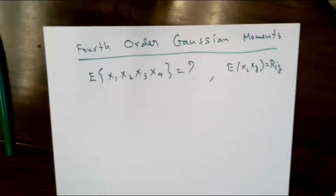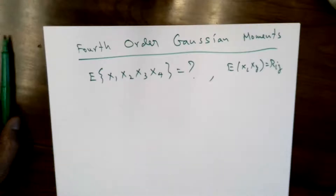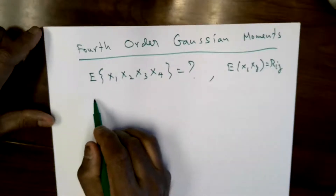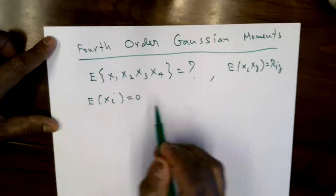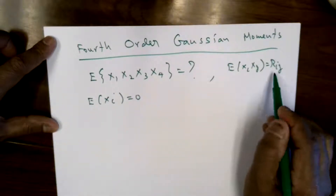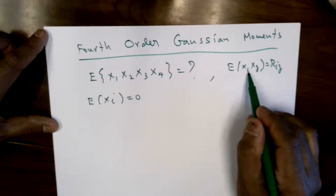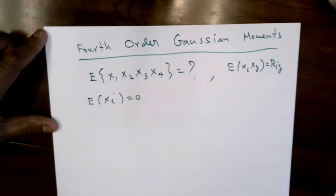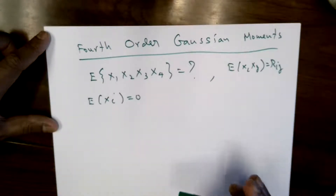Let's look at this problem: finding the fourth order moment of jointly Gaussian random variables. Here all the random variables are zero mean and they have correlation given by the expected value of x_i, x_j = r_ij. The question is: what is the fourth order moment of x1, x2, x3, x4?